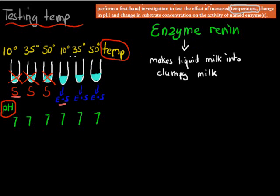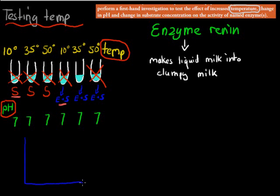With renin, it works best at about 35 to 37 degrees Celsius. So will we expect something to happen if it's way below 37 or at 50? The answer is no. If it's below 35, not much happens. If it's well above 35, not much happens either. The optimum function for renin is at 35 degrees. If we have a graph, the activity is on one axis and temperature on the other.